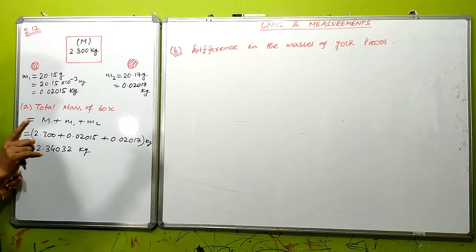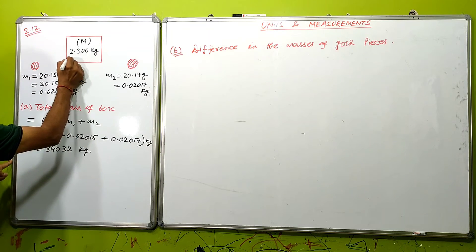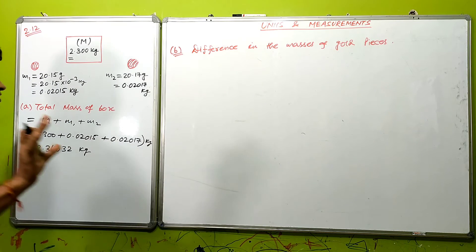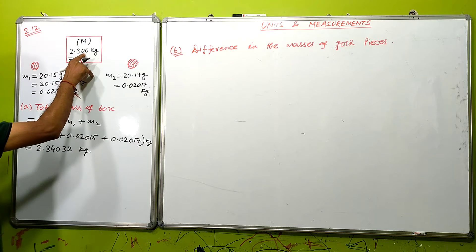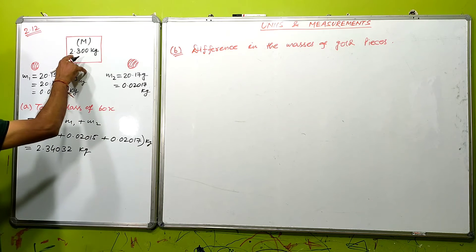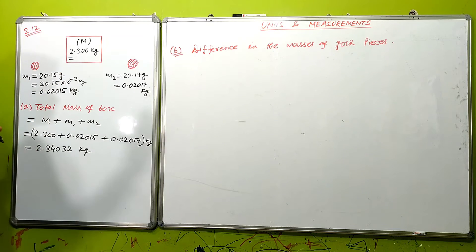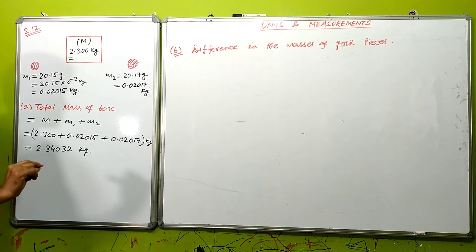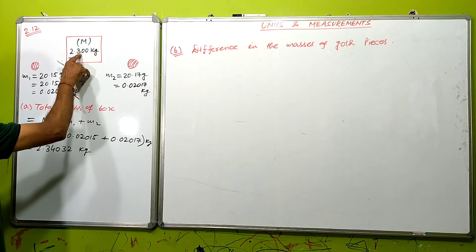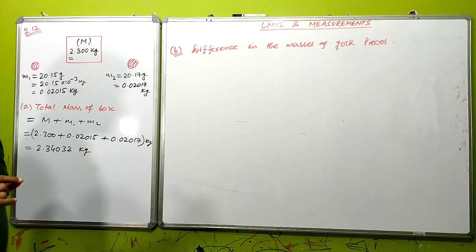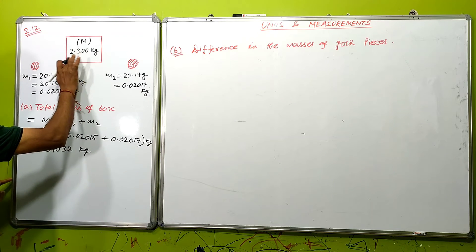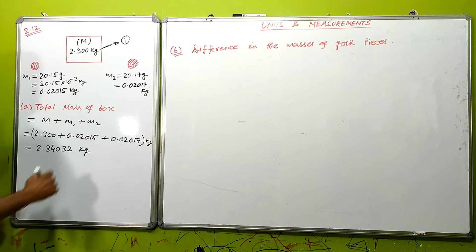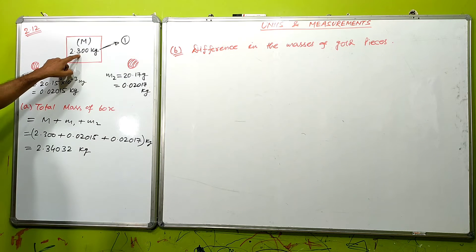Now let's consider the concept of decimal places. Look at 2.300 — we will not count significant digits here; for addition or subtraction we look at the number of decimal places after the decimal point. In this case, 2.300 has 3 decimal places, but 2.3 has only 1 decimal place.